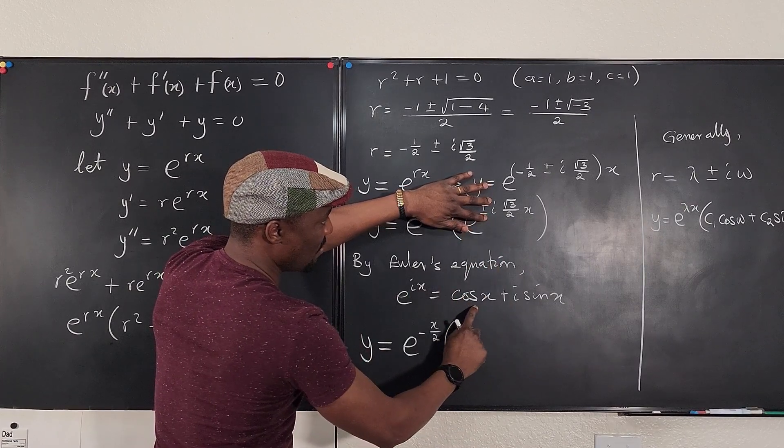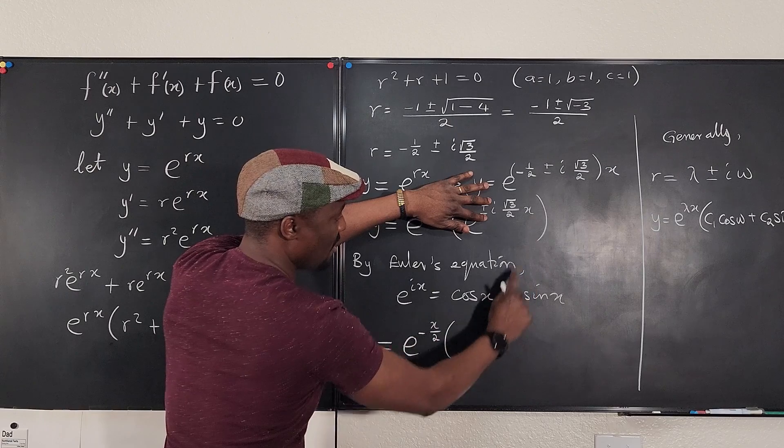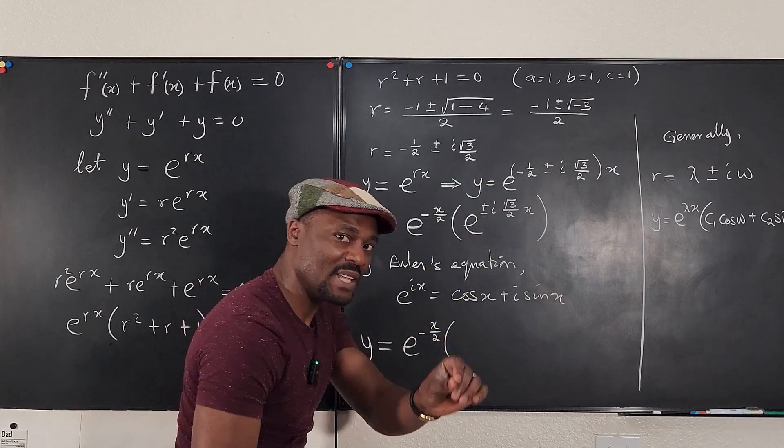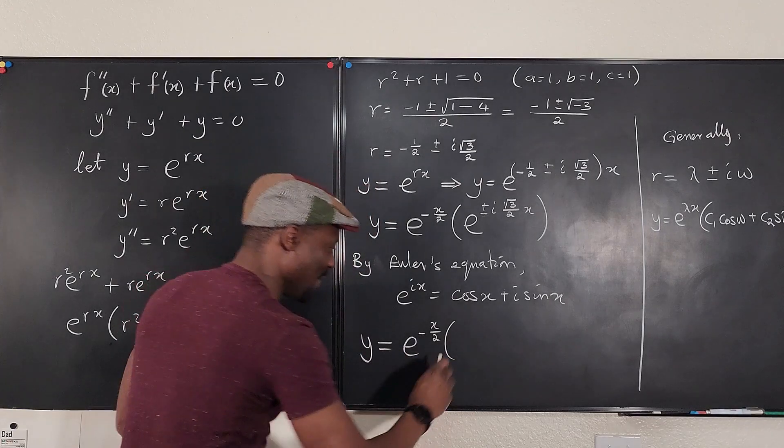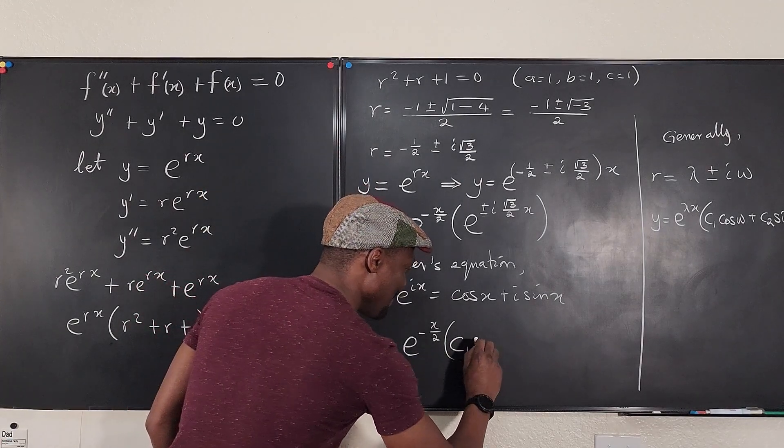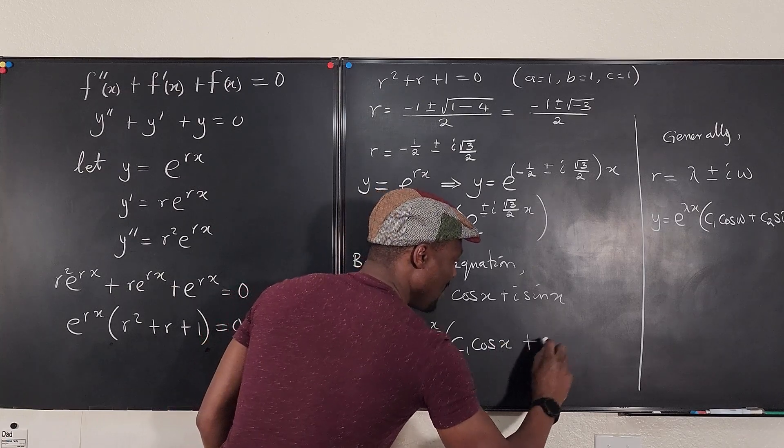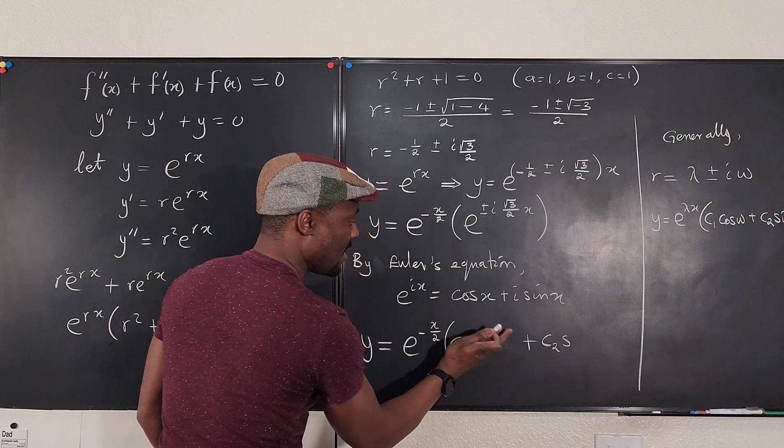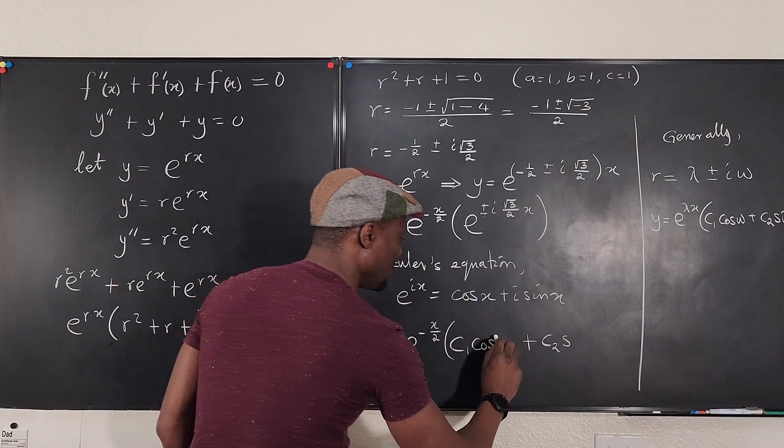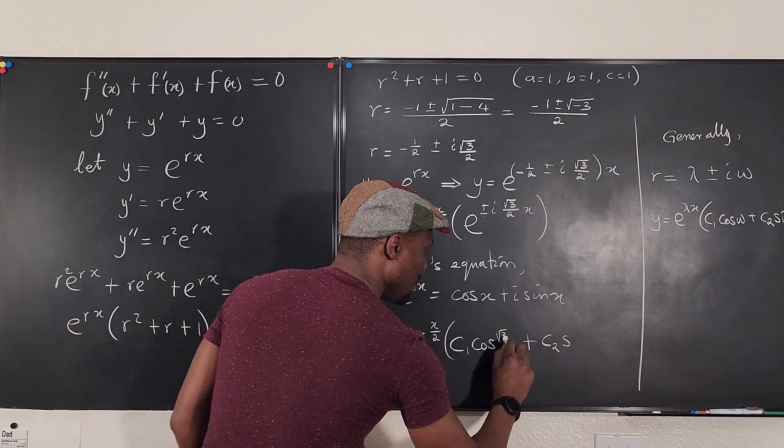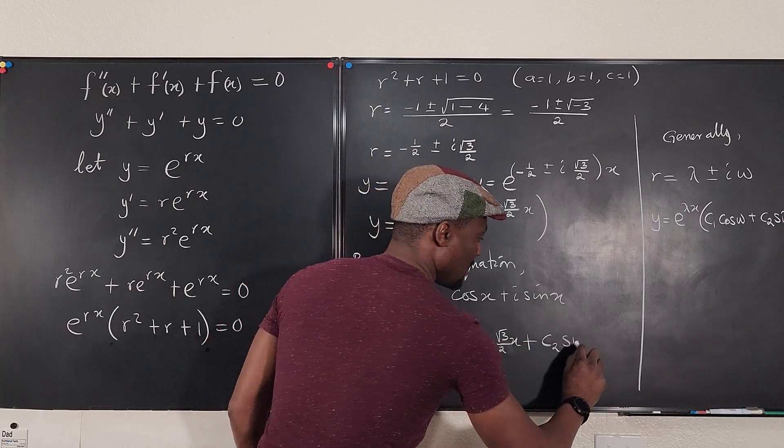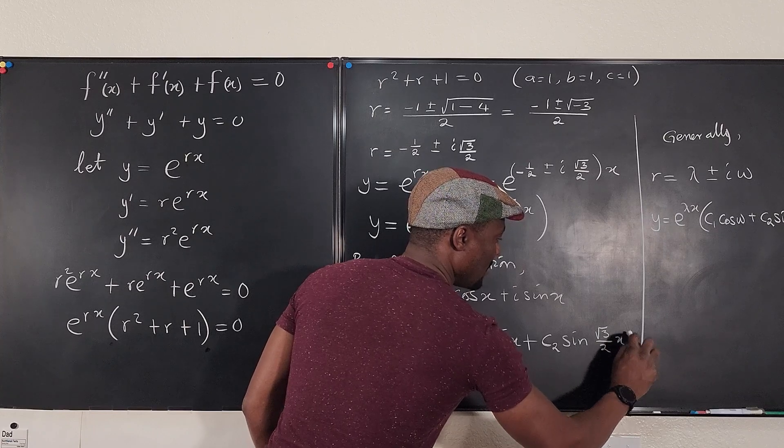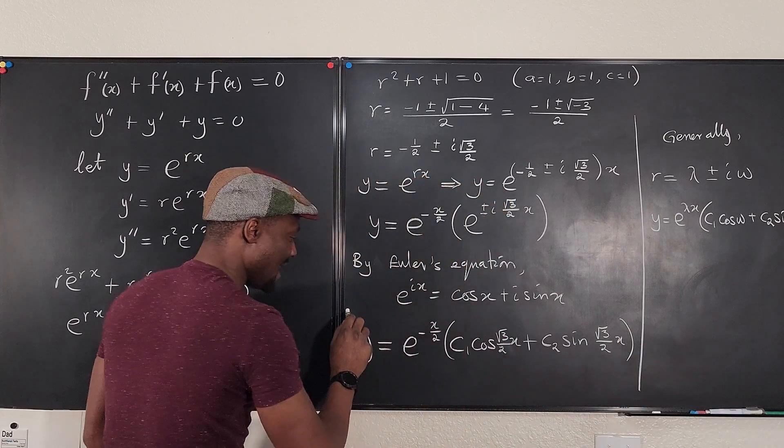Whenever you have this, it's going to be the cosine of this plus the sine. Well this says i, but ignore the i because we can replace the i with a constant. So let's do that. C1 cosine, not x, what's the argument we have here? Square root of 3 over 2 x plus C2 sine square root of 3 over 2 x. And this is the solution.